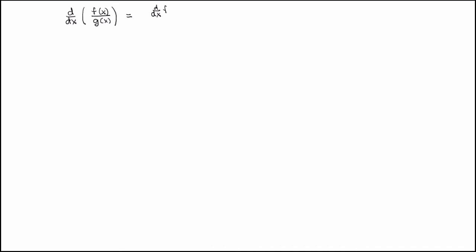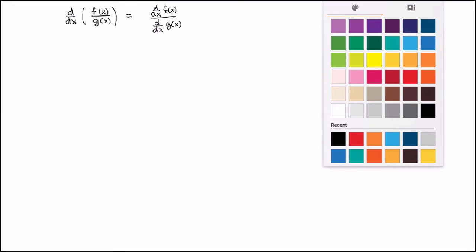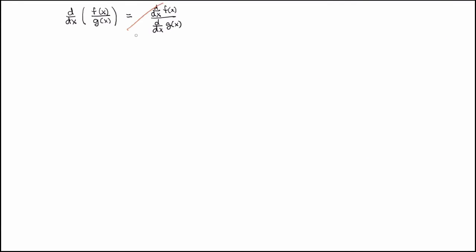Let me look at one last rule for today. Suppose I want to take the derivative of the quotient of two functions. You may be tempted to say this is going to be the quotient of the derivatives — but just as for the product of two functions, this is totally, absolutely wrong. Never ever do that. It is certainly not true that the derivative of a quotient is the quotient of derivatives.